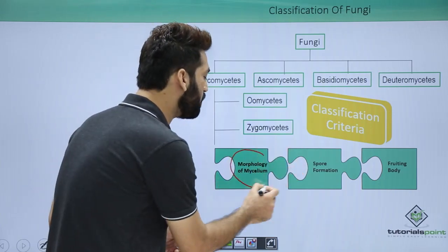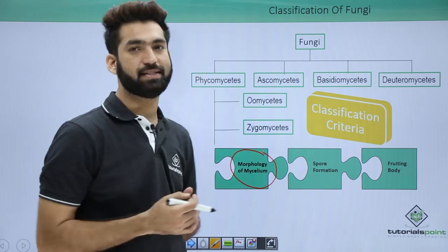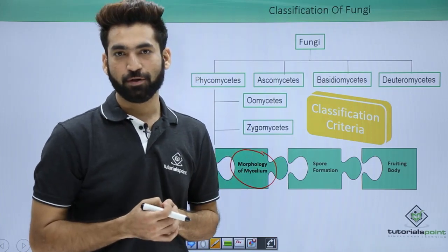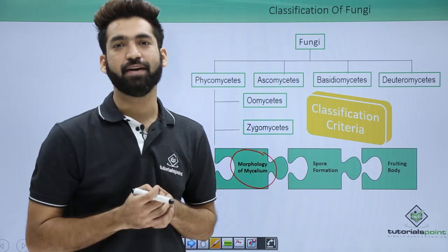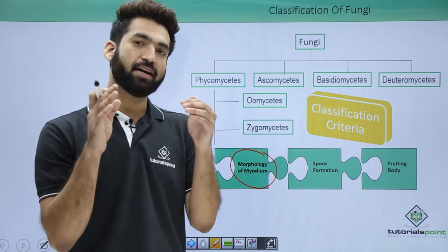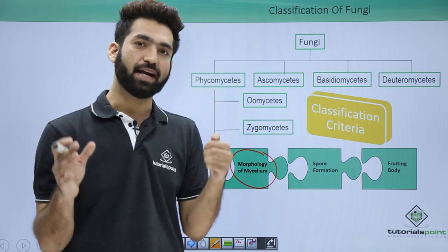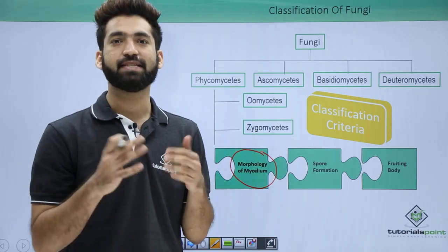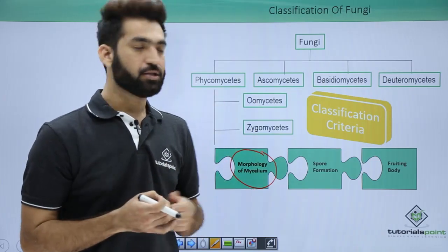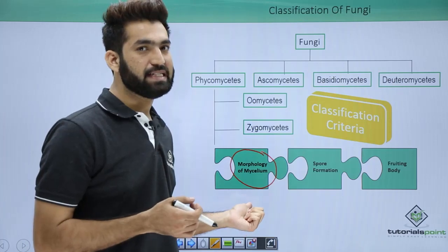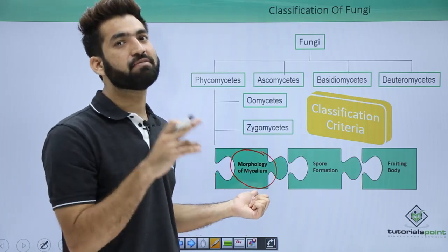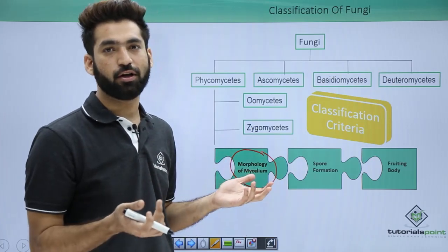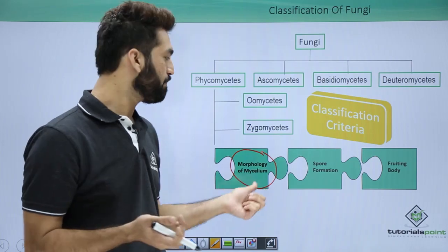The very important is morphology of mycelium. Mycelium, as I have told you, it's a connection between hyphae, and when the hyphae are connected, the mycelium can be aseptate or can be septate. So based upon the mycelia — aseptate mycelia or septate mycelia — there are different vertical kinds of fungus.